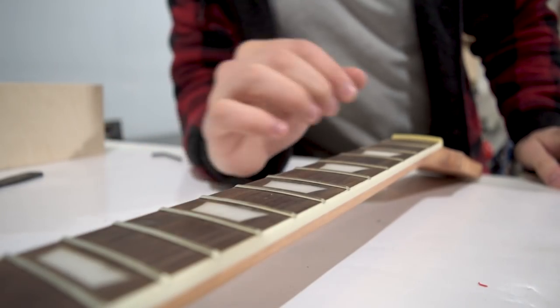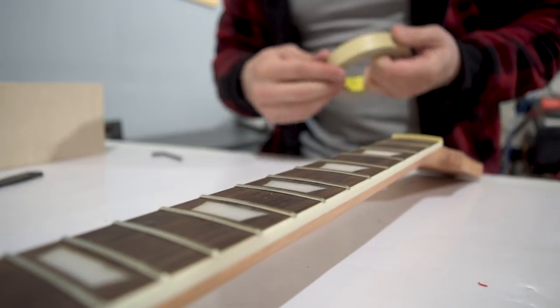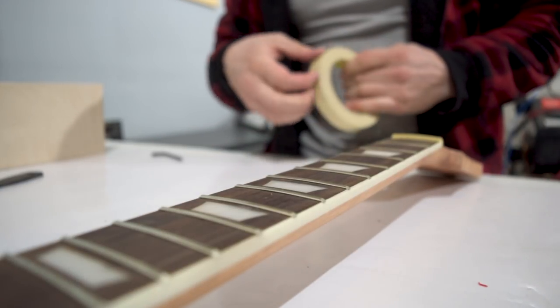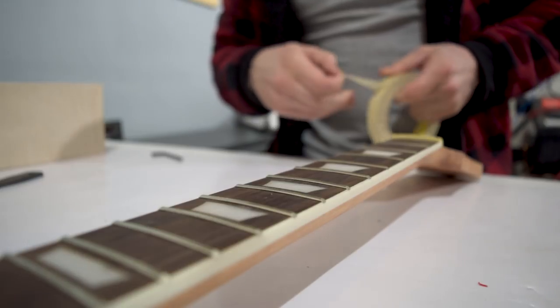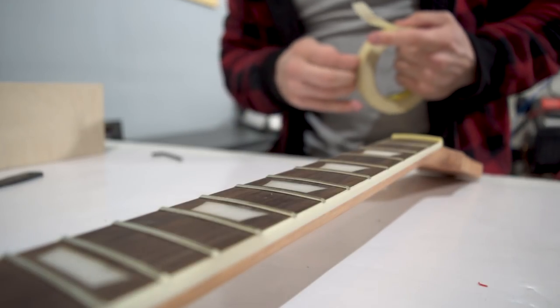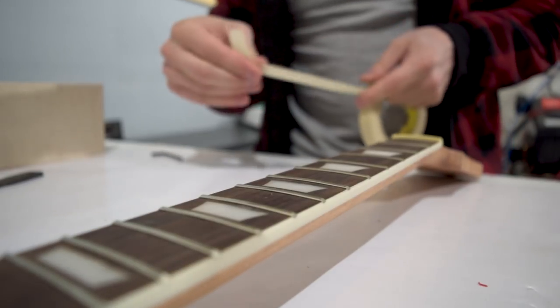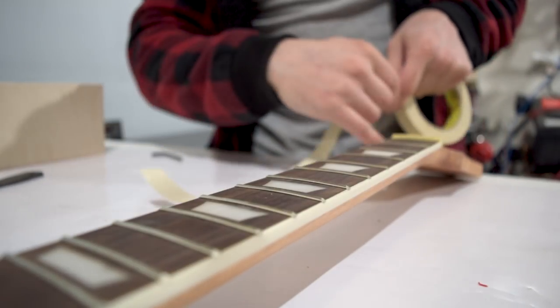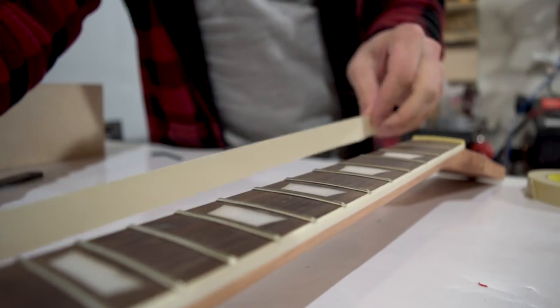So for the leveling, what we need to do is make sure that we don't end up with any low spots. So we're going to need to mark the frets. But first, I highly recommend that you tape off your fretboard to protect it so that you don't end up doing any damage to the fretboard itself.